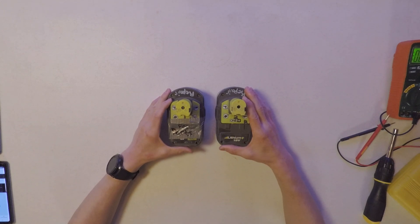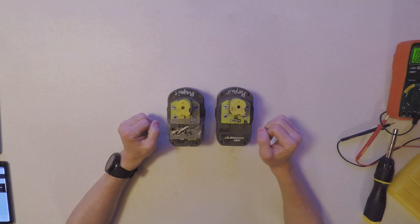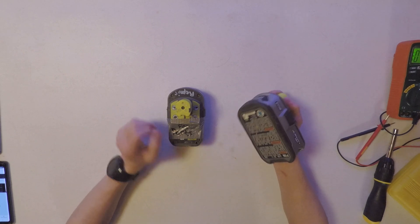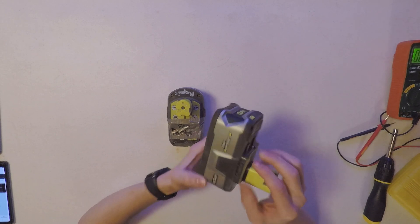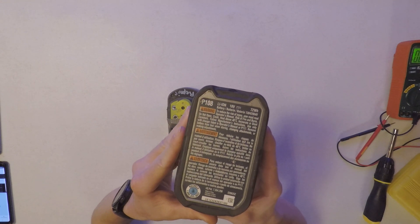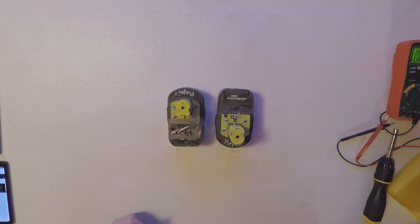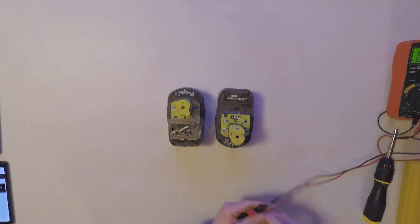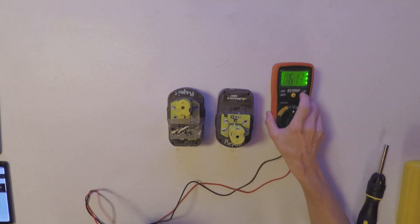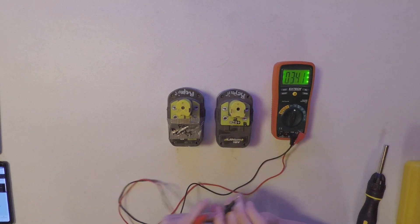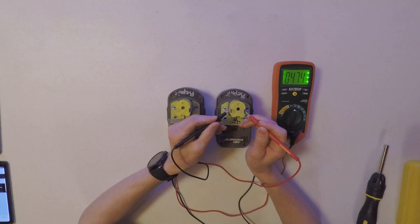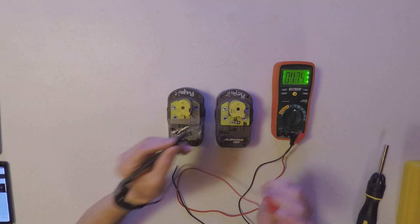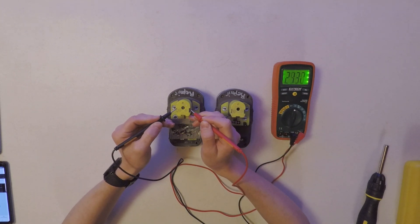All right, so today I have two Ryobi P108 72 one-hour batteries in need of repair. They don't work anymore, so we're going to crack them open and find out what's wrong. As you can see on the meter, I'll give these a test - 4.74 volts, a little bit shy of 18.